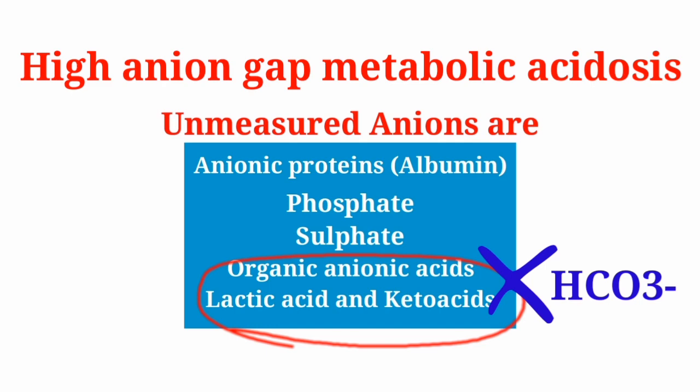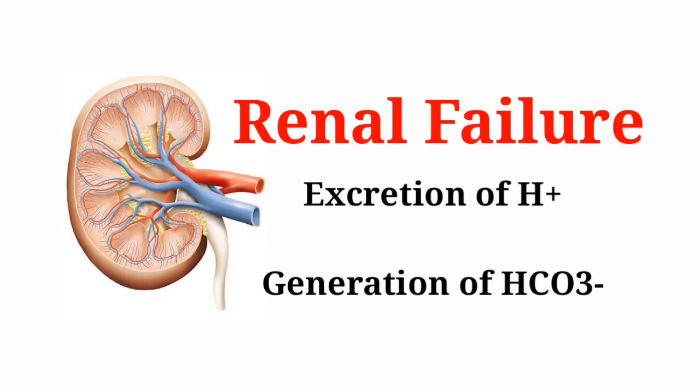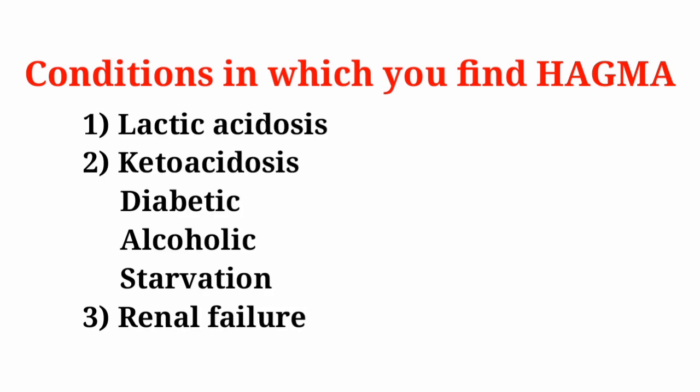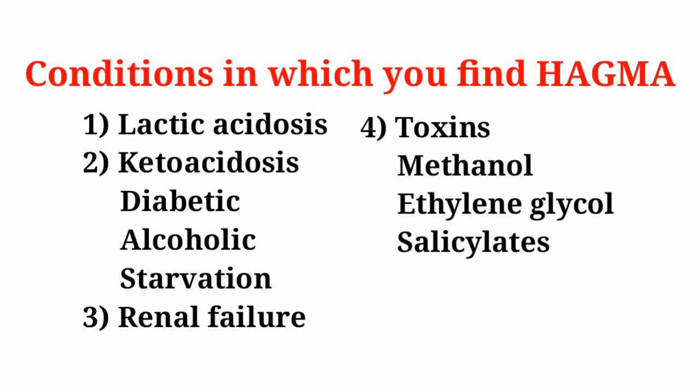In high anion gap metabolic acidosis, there is an increase in unmeasured anions like lactic acid in lactic acidosis and keto acids in ketoacidosis. To buffer this acid load, bicarbonate is used up. A second condition is renal failure, in which excretion of H+ ions and generation of bicarbonate is impaired. Conditions causing high anion gap metabolic acidosis include lactic acidosis, diabetic, alcoholic, or starvation ketoacidosis, and renal failure.